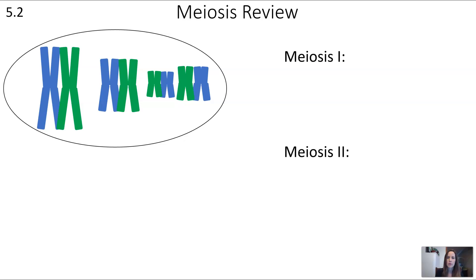Now let's review those two steps of meiosis in a little bit more detail with a different model showing changes in the chromosomes. Once again we're not seeing all 46 — imagine this is some organism with fewer chromosomes. This organism has eight chromosomes, and this is showing after DNA replication because each chromosome is shown in the X form as having two chromatids.